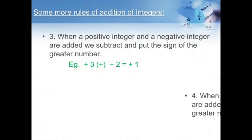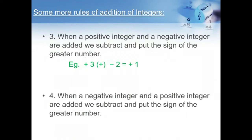The fourth rule: when a negative integer and a positive integer are added, we subtract and put the sign of the greater number. Example: minus 3 plus plus 2 is equal to minus 1. Here, the negative number is greater than the positive integer, so we put the sign of the negative number.